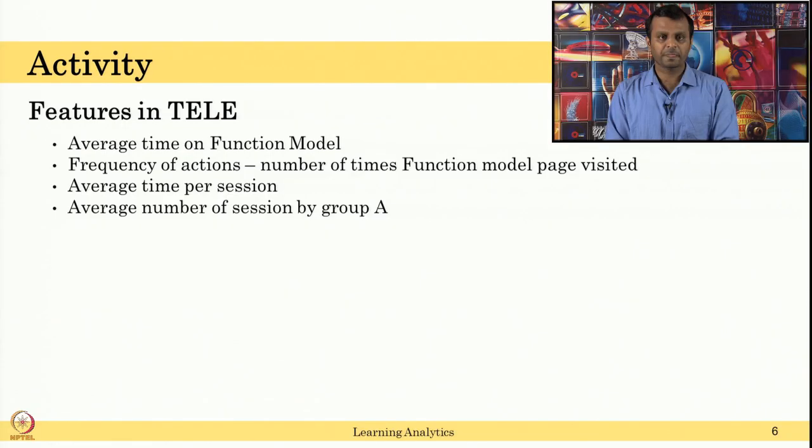The features in TELE can be average time on functional model. For example, a student will be using this TELE for multiple sessions and you might be moving around functional model, qualitative model, quantitative model multiple times. What is the average time a student spent on functional model? That can be the feature. How do you compute it? You have to use Excel sheet, simple Excel sheet tools, tricks. You have to define what are the student IDs. For a given student ID, you can compute when and all student use the functional model, and you have to use the timestamp data to compute the average. You might know how to use Excel sheet if you have watched the week 2 video.